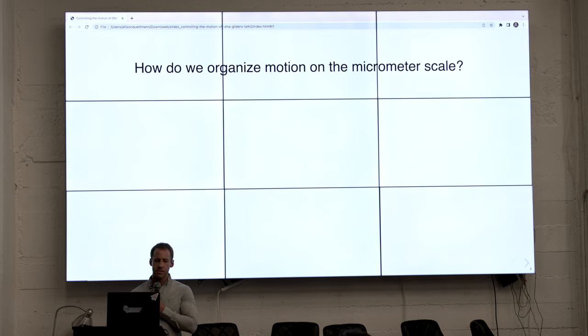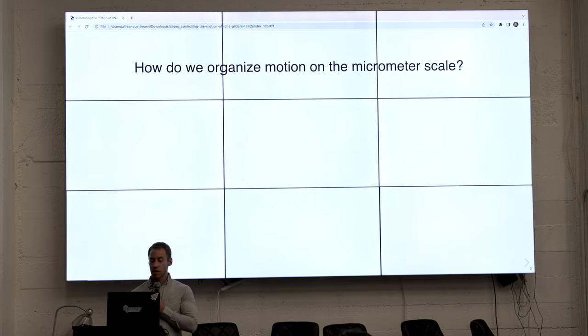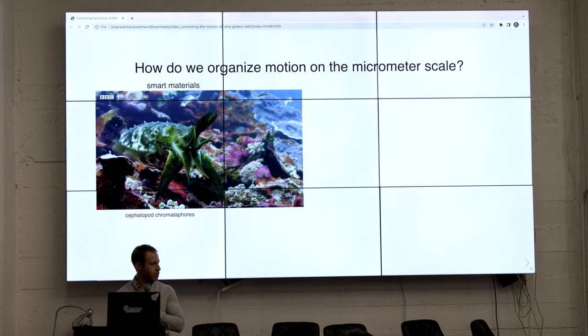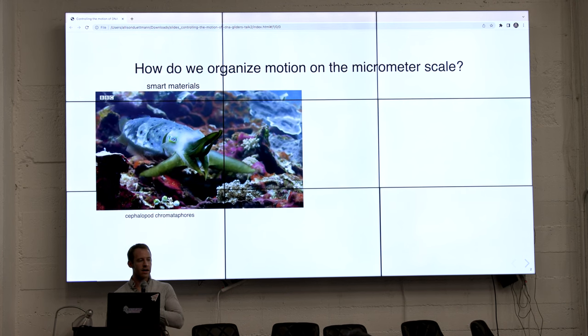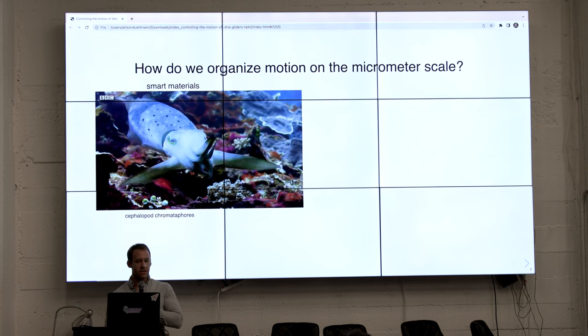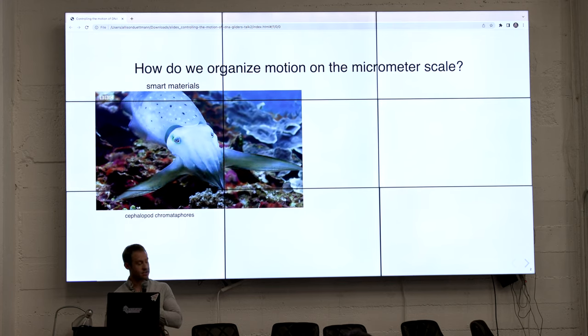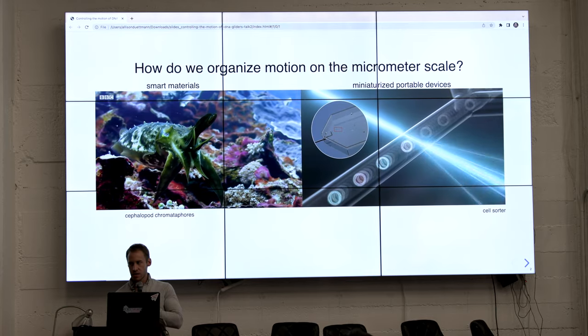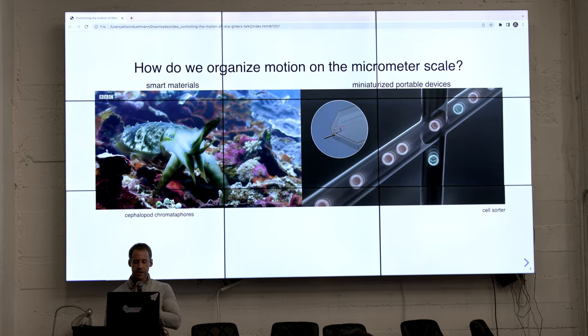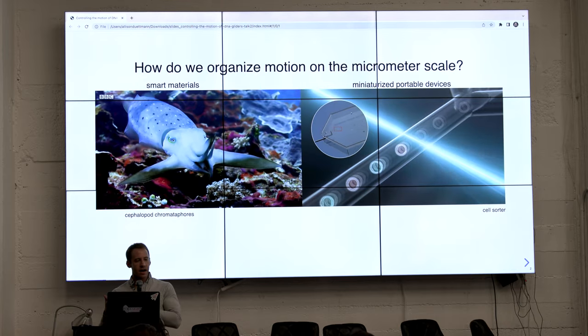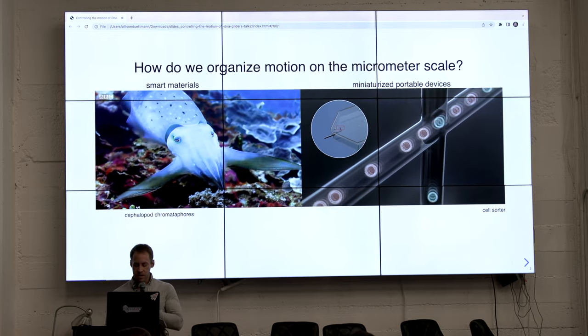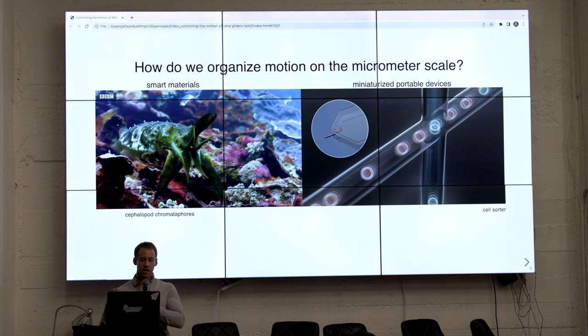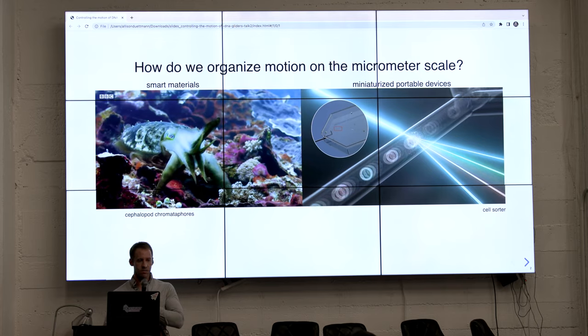So we're interested in eventually developing smart materials and making miniaturized portable devices, and we're inspired by nature. Nature is very good at this, can create materials that rapidly change properties, as shown here through the chromatophore, and we want to miniaturize devices such as cell sorters, so that you can put them in your pocket, take them wherever you want. And to achieve these things, we need the capability to control motion at the micrometer length scale.